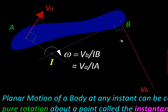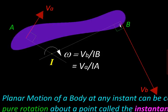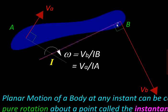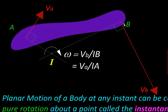Once we know this instantaneous center and omega, then finding the magnitude of velocity and direction of velocity of any other point is easy. To find the velocity of say this point B, we take the distance IB from the instantaneous center to the point and multiply it with the omega that we just found.